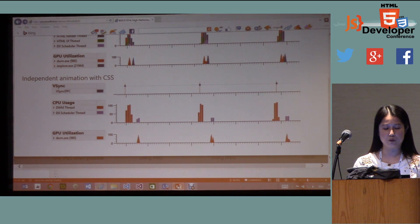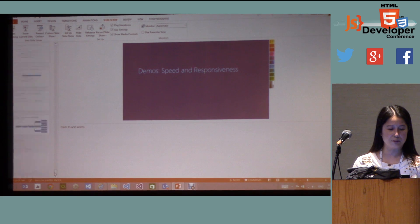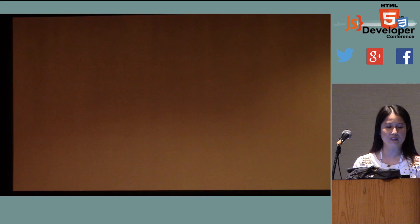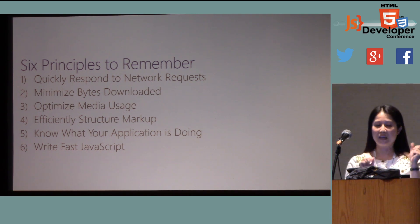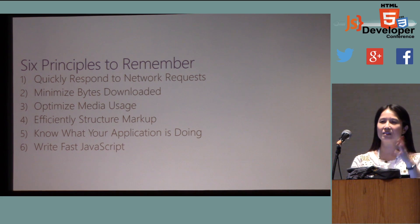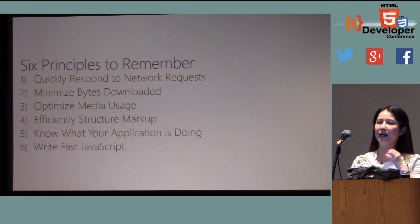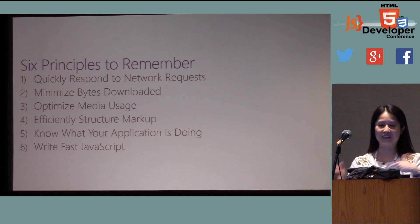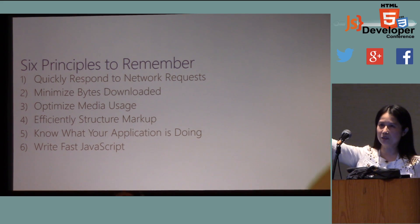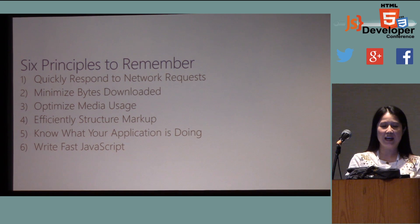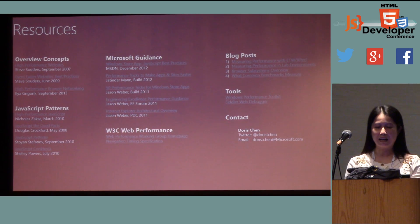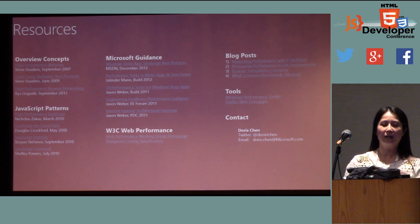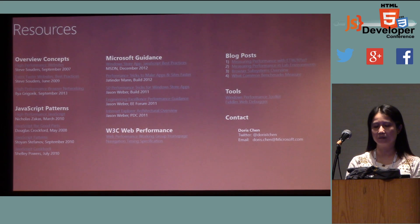My talk ran a little long, so let me summarize the key takeaways. First: respond quickly to network requests. Second: minimize image downloads as much as you can. Third: optimize image usage — find the right native size, try sprites, consider PNG versus JPEG. Fourth: optimize markup — where you put your JavaScript, and use CSS versus JavaScript. I also covered tips for writing fast JavaScript. The resource page lists all performance tuning references, including Steve Souders' books and other performance talks. Thank you very much.